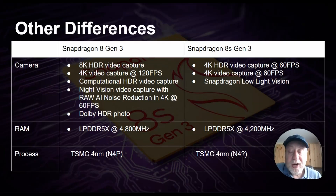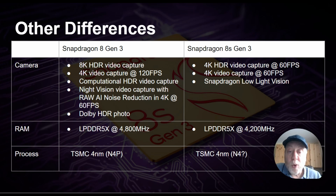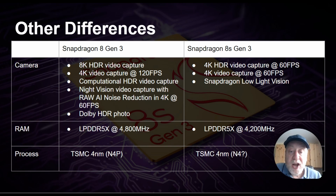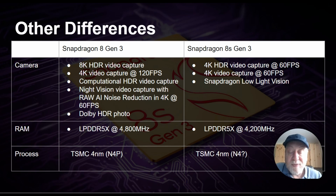There are also differences in the camera. The original 8 Gen 3 has 8K HDR video capture, whereas the 8S Gen 3 only has 4K HDR video capture at 60 fps. The original supports 4K at 120 fps; this one is 4K at 60 fps. There's no computational HDR video capture. Night vision video with raw AI noise reduction in 4K has been replaced by Snapdragon Low Light Vision, and there's no Dolby HDR photo capability in the 8S Gen 3.